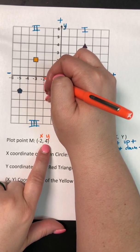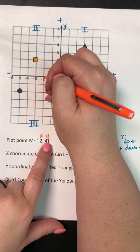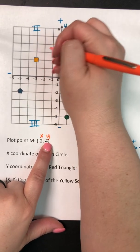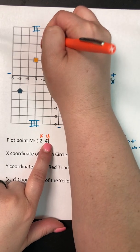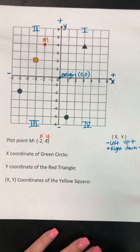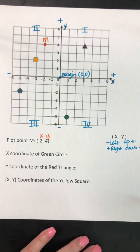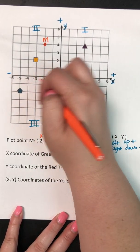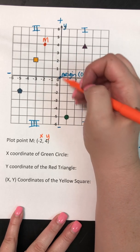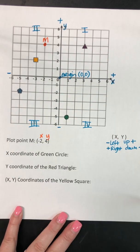And then I have a positive 4, so I'm gonna go up to the fourth floor, 1, 2, 3, 4. So I put my dot and it says that is point M, so I label it with an M. Again your x, y coordinate, you start at the origin, you walk left or right, and then you take the elevator upstairs or downstairs.